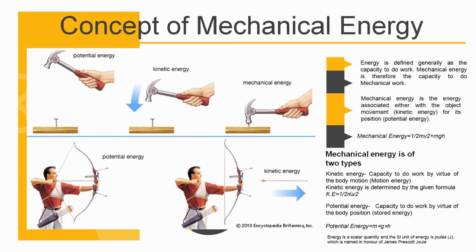Number one, kinetic energy, that is the capacity to do work by virtue of the body motion, that is said to be the motion energy. Kinetic energy is determined by the given formula: kinetic energy equals half mv square, that means one half of body mass multiplied by the square of its velocity.